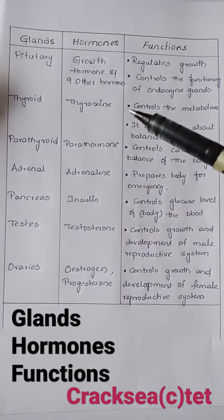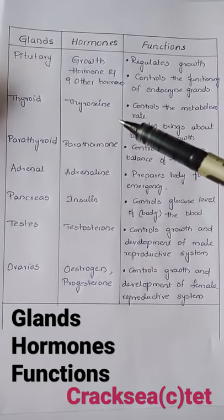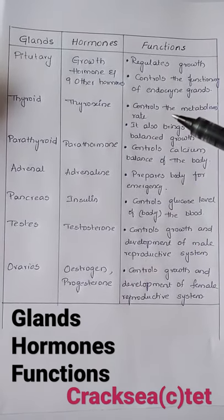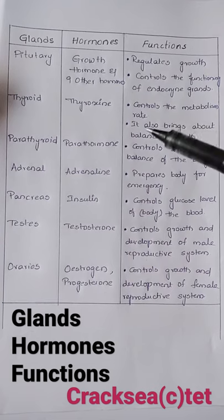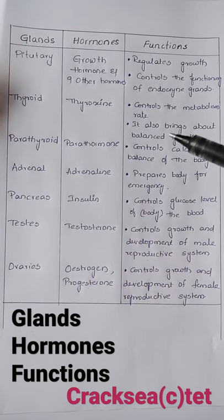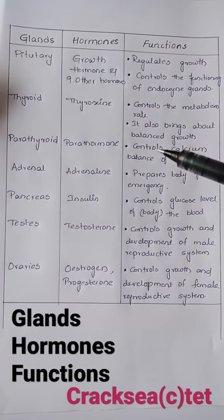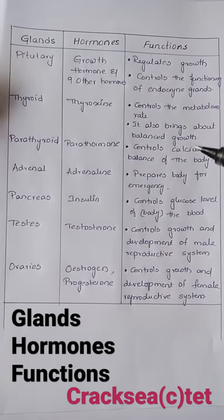Second one: thyroid. It secretes the thyroxin hormone, controls the metabolism rate, and also brings about balanced growth.